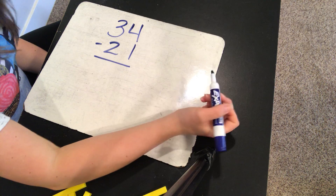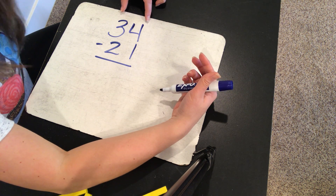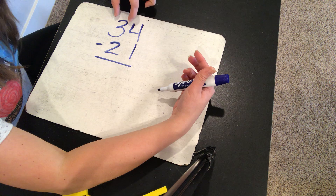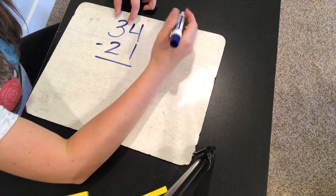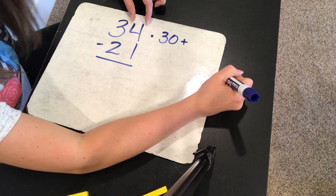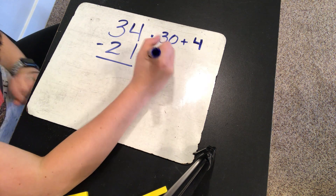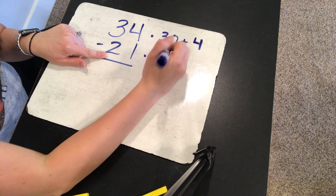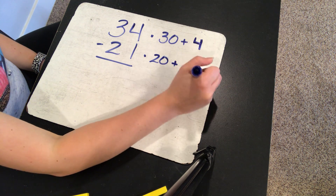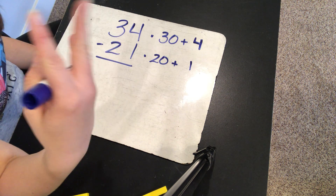In first grade, you learned a lot about expanded form. Expanded form is just when you stretch out the number. So in 34, what number sentence equals 34 if I stretch it out? How many 10s are in 34? There are three 10s — 10, 20, 30 — those three 10s represent 30. So the expanded form is 30 plus four ones: 30 plus 4 equals 34. And for 21, the expanded form is two 10s — 10, 20 — so 20 plus 1. 20 plus 1 equals 21. You can use what we just figured out to help you solve the problem.